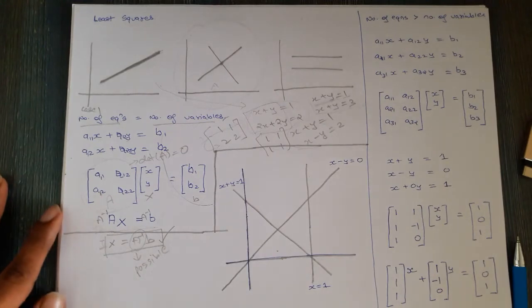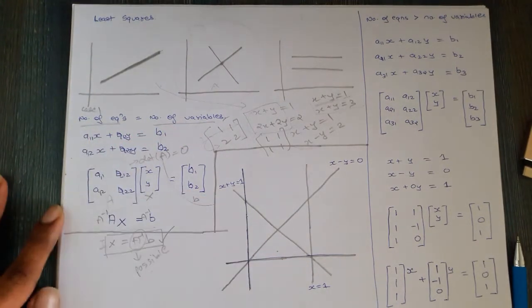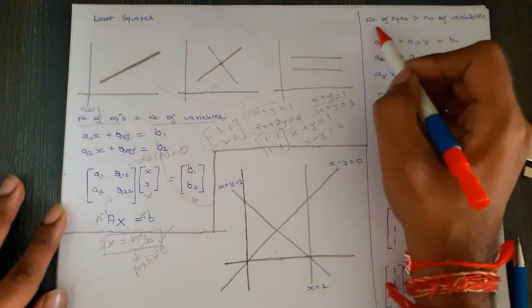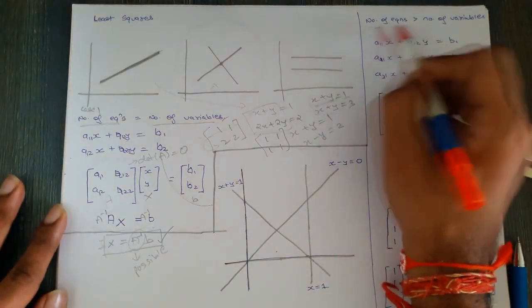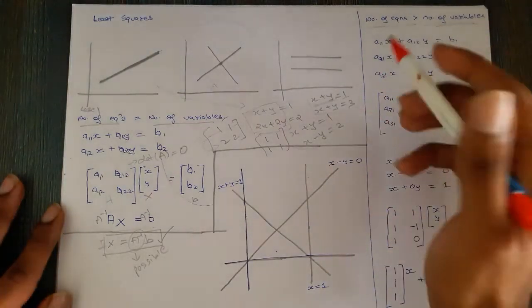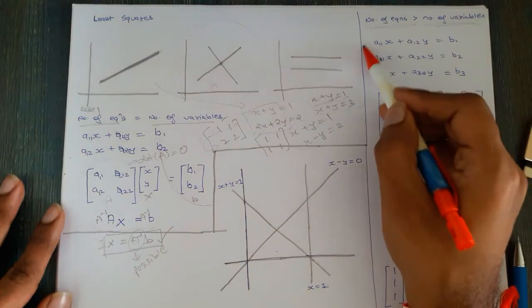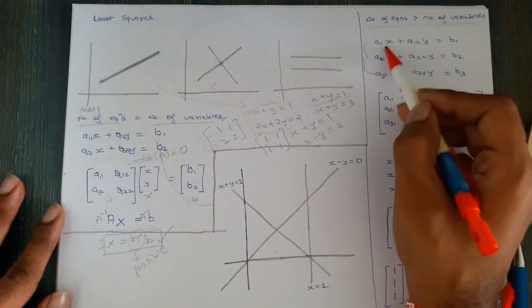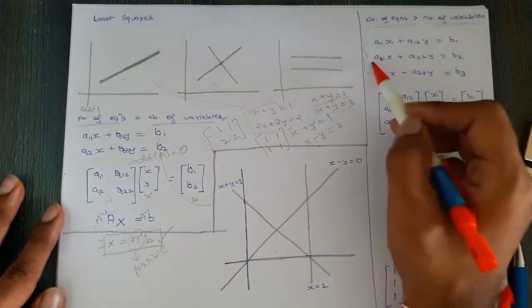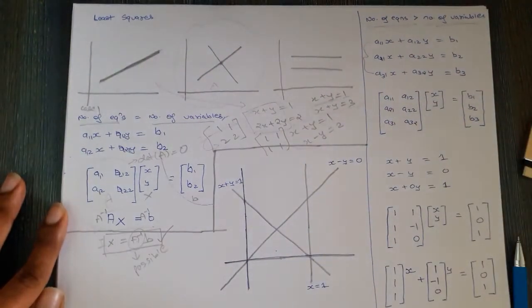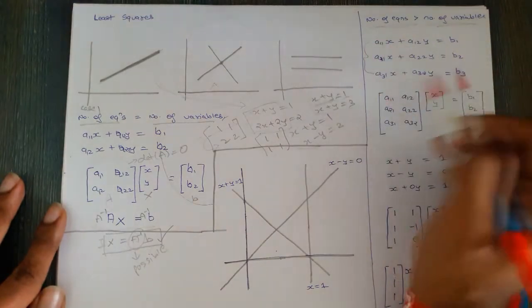Now let's consider Case 2: the number of equations is greater than the number of variables. In this case we have three equations — a11·x + a12·y = b1, and similarly two more — so we have three lines.